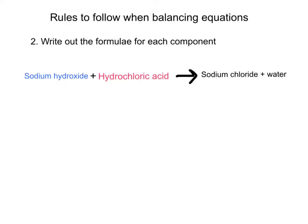The second rule is that you then need to write out the formula for each of the components within your equation. This is where your ability to balance ionic formulas comes into play — unless you can balance your ionic compounds by themselves to start with, your equations are never going to balance. So make sure that skill is honed and you're able to problem solve if you come across any issues.